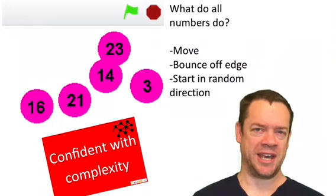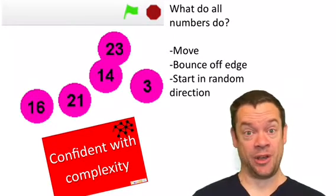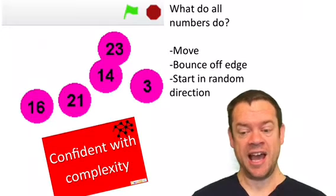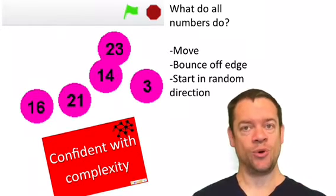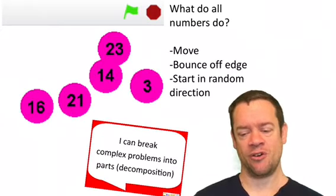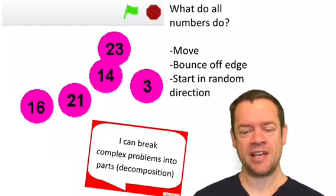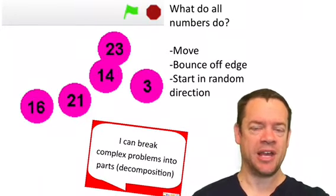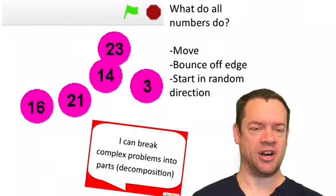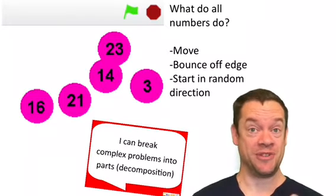We might be looking at something like the small numbers that bounce around the screen and we might be saying, what do all of these do? Well, if you look carefully you see that they all move, they all bounce off the edge, and if you really look carefully and ran this a few times, you'd see that they also always start in a random direction.